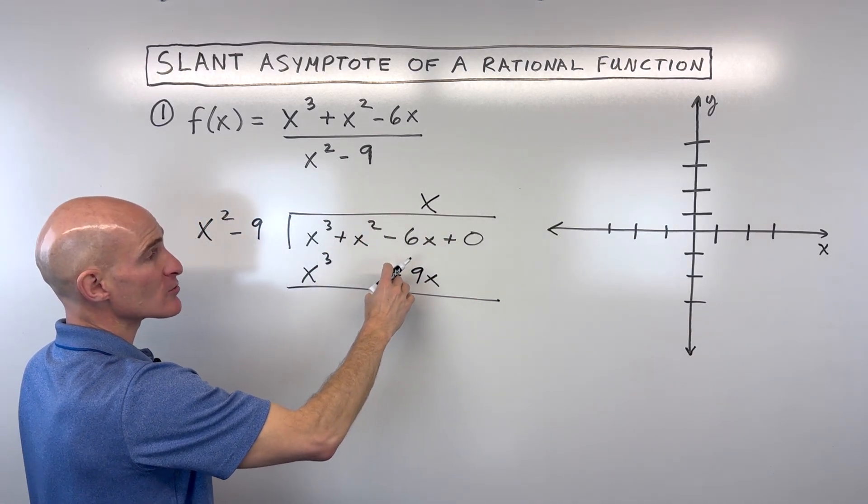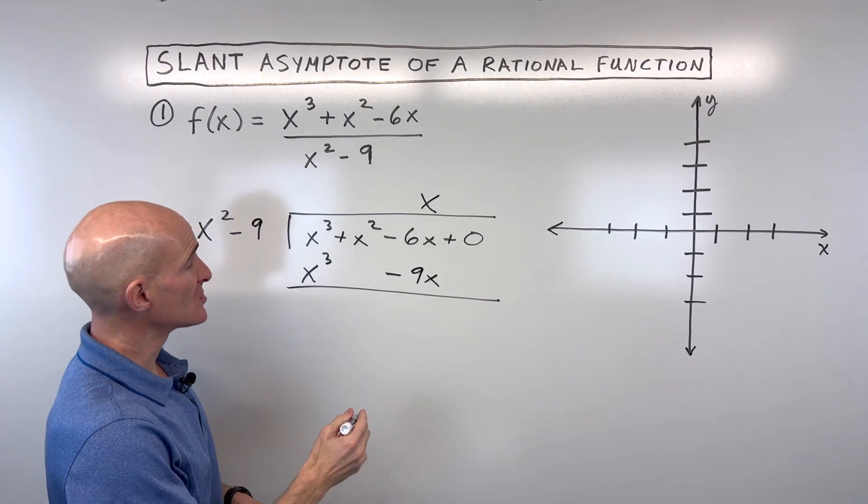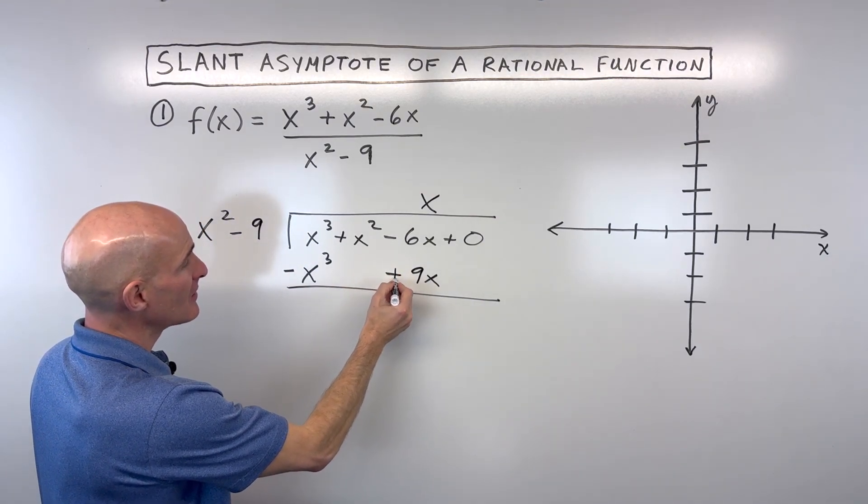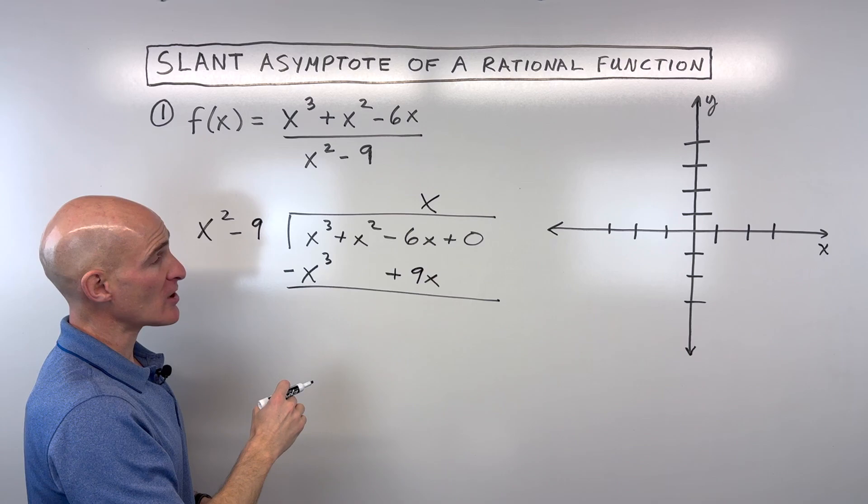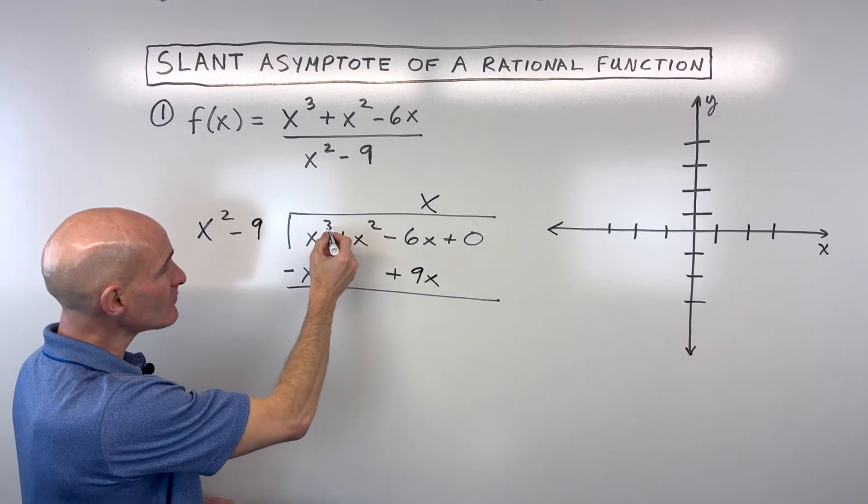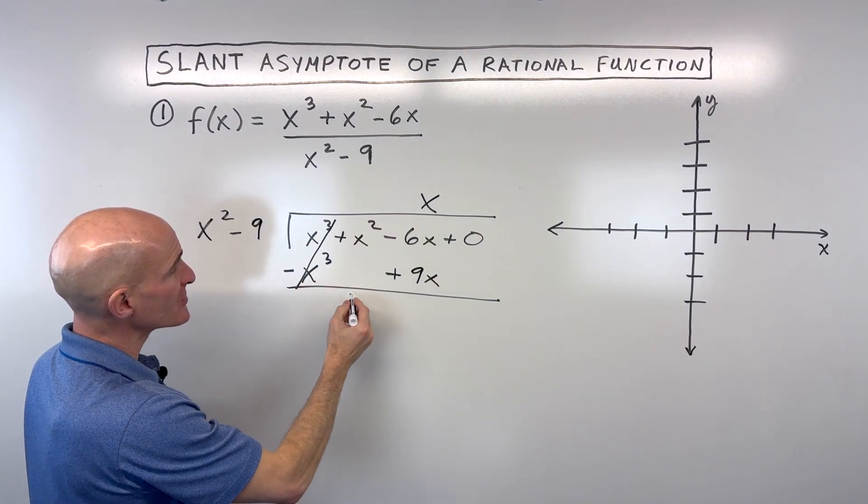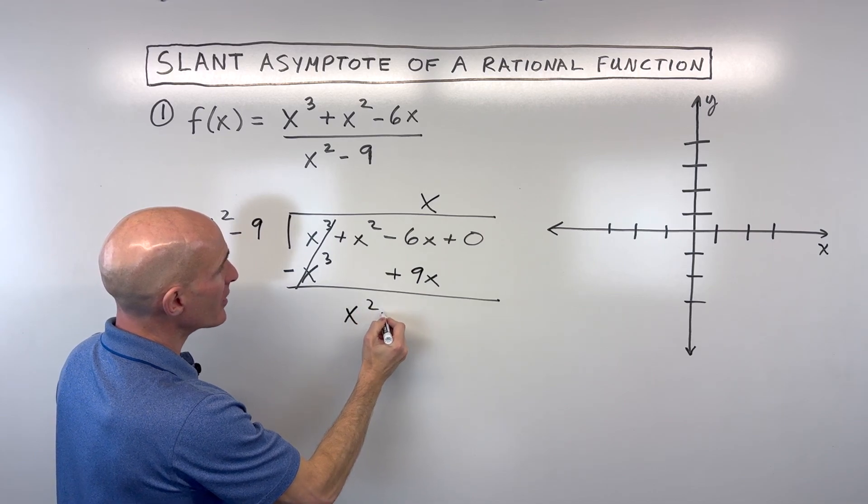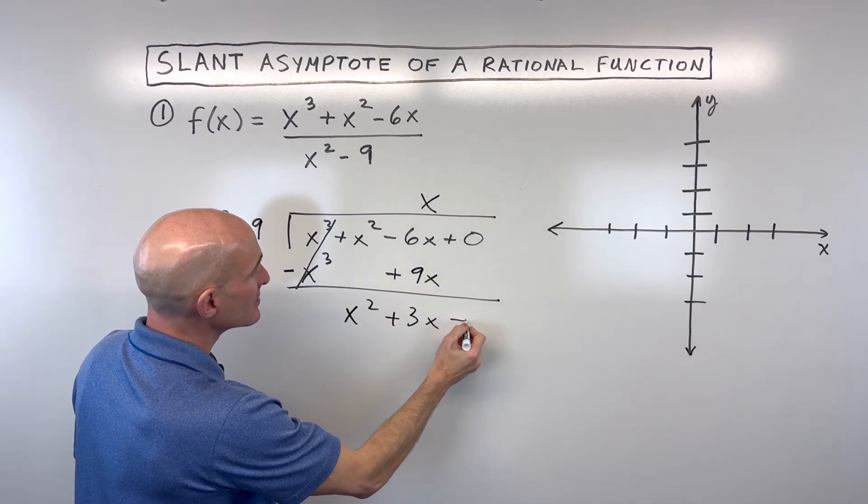Now we want to subtract, or what some students like to do is change the signs to the opposite and then add straight down because subtraction is just adding the opposite. If we do that, you can see that first term cancels out. We get x squared plus 3x plus 0.